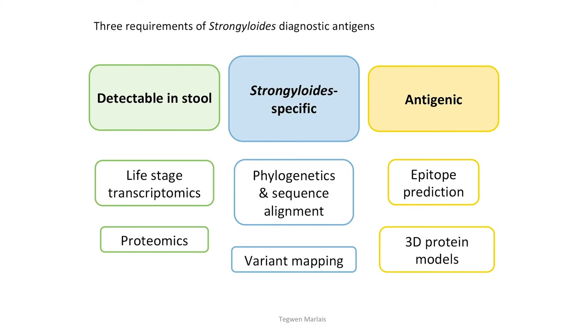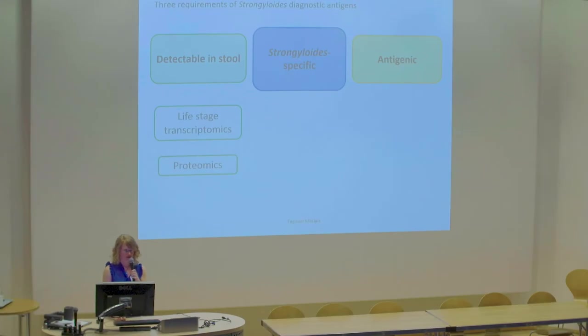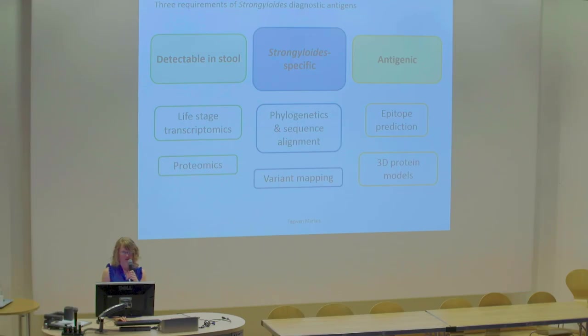That was a whistle-stop talk through my analysis, showing how I used open access data from transcriptomic and proteomic studies, phylogenetic and sequence alignment of proteins, along with genome-variant mapping, and epitope prediction and 3D models to analyze all that data against those three requirements.